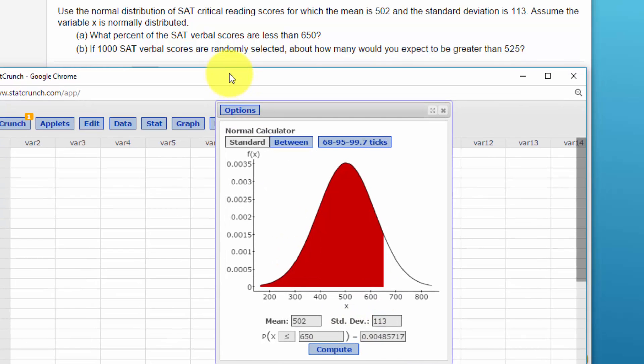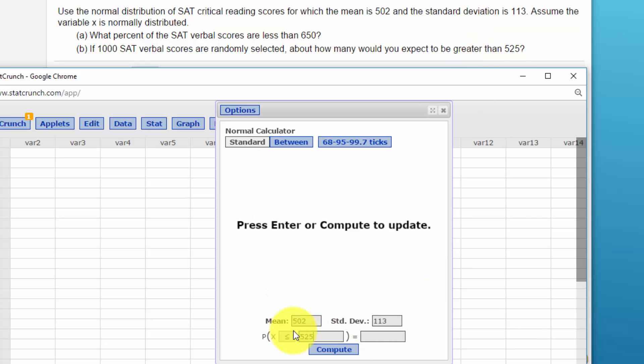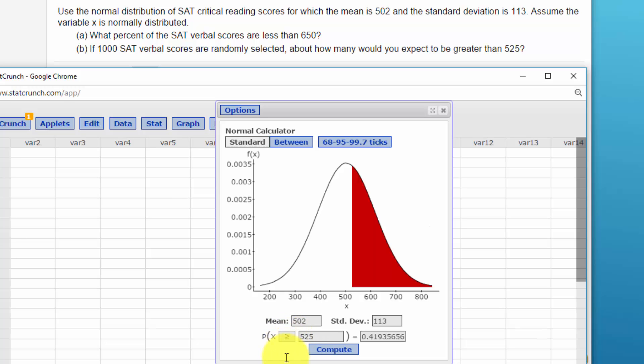The next one, a little bit trickier. Let's say if you've got a thousand SAT scores, which is nice, how many would you expect to be greater than 525? So I want to put 525 in there, click in the greater than symbol, which means I want everything on the right side of 525. And that gives me a probability of 0.419. And if you multiply 0.419 times 1000, you would get 419 people would be expected to score greater than 525.